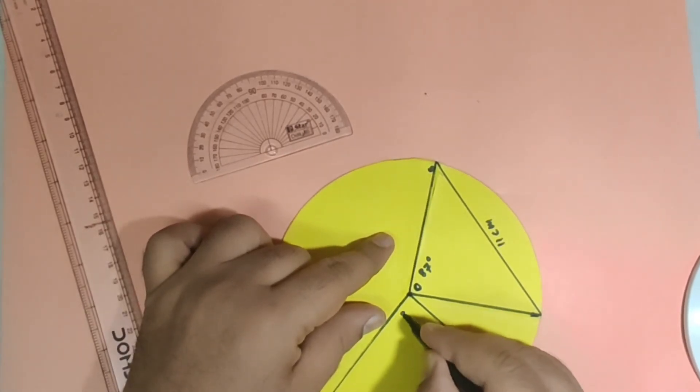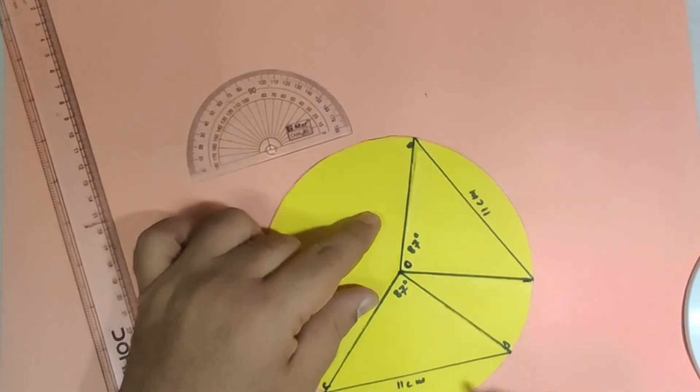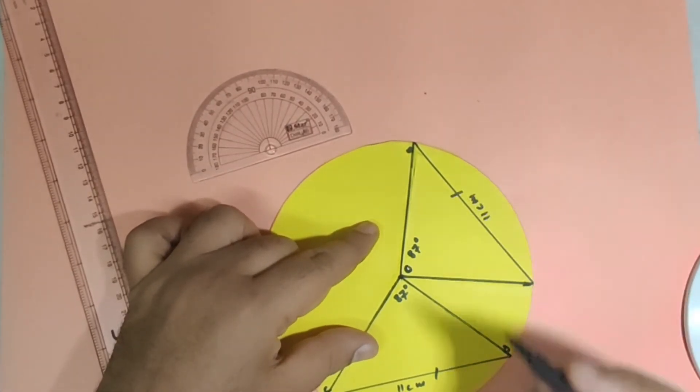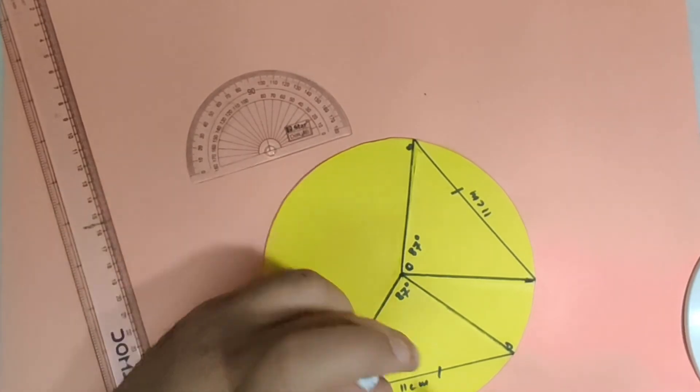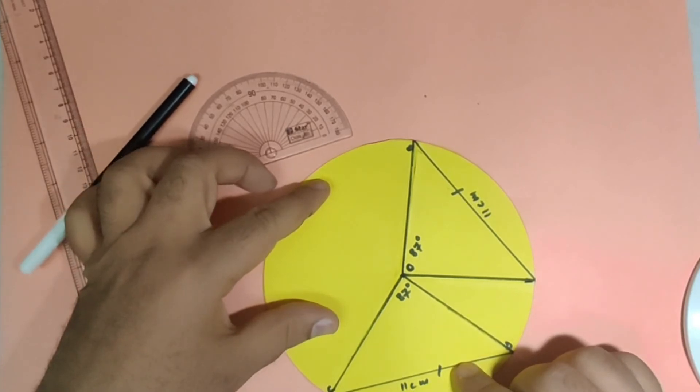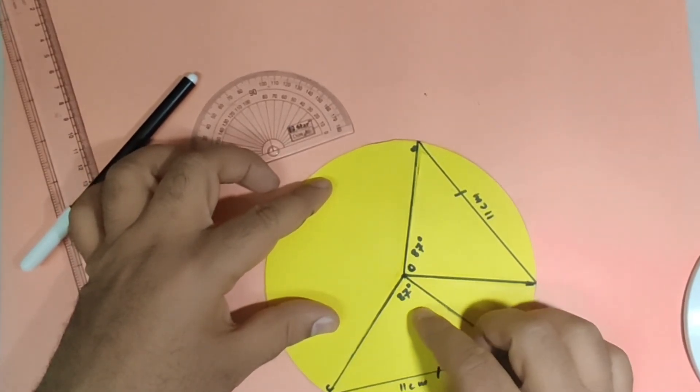This could only happen because they are subtended by the equal chords AB and CD. So we have demonstrated that equal chords of the circle subtend equal angle at the center.